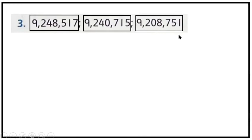Question 3: We have 9,000,000 and again 9,000,000. That means we have to see which number is the smallest. Here is 248, here is 240, and here is 208. So we will put 9,208,751 first.